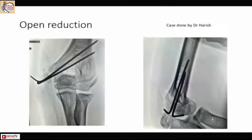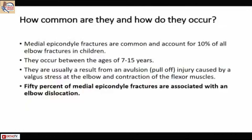They can be fixed once you identify them, by any means. If you are dealing with a bigger child, probably a screw. Most smaller kids can be managed with simple K-wires, and all the fragments will fall back into place. These fractures are quite rare — in my whole lifetime I would have seen probably five or six, and I don't work in a trauma setup. They are not like supracondylar or lateral condyle fractures, and they can be missed. They usually occur between seven to fifteen years, and fifty percent of medial epicondyle fractures are associated with elbow dislocation, meaning some instability is present.